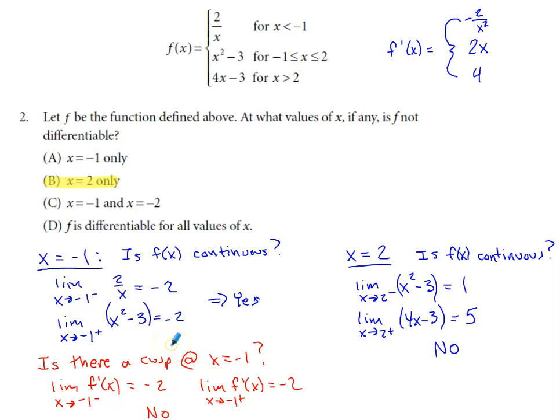Two things have to happen in order for us to be differentiable. We've got to be continuous. If you're not continuous, there's no way you can be differentiable. Well, we are continuous at negative one, but I need to have a nice smooth transition in slope at the location under consideration. So at negative one, do I or do I not have a cusp?